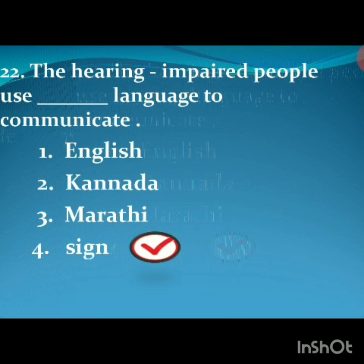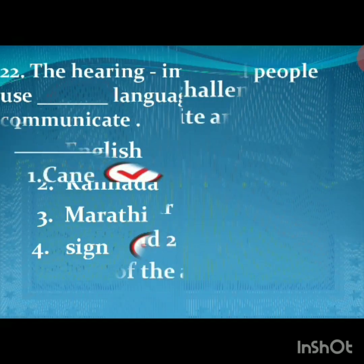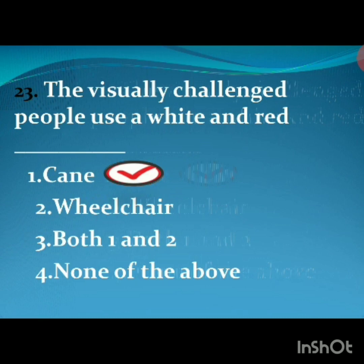Next: the hearing impaired people use dash language to communicate. The options are: first, English; second, Canada; third, Marathi; fourth, sign. The right option is the fourth option — sign. The spelling of sign is S-I-G-N. The hearing impaired people use sign language to communicate.